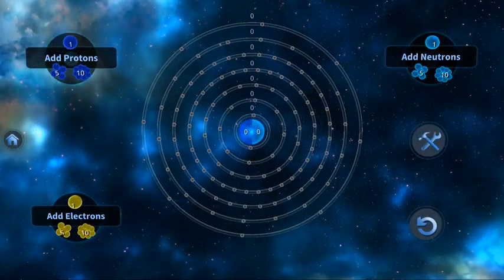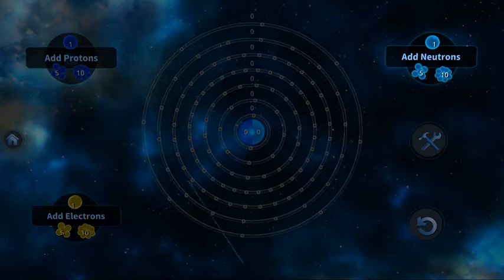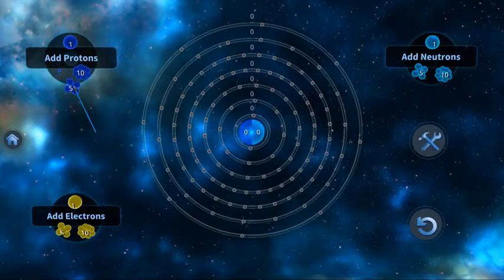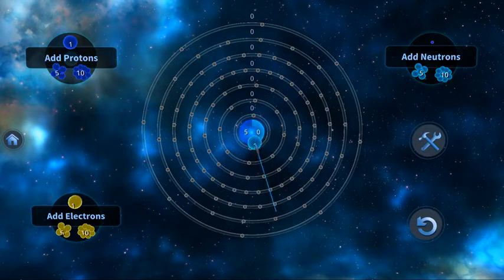Around this scene, we have the options to add a number of protons, neutrons, and electrons to the atom. We can do so by grabbing what we want to add, and dragging it into the atom.